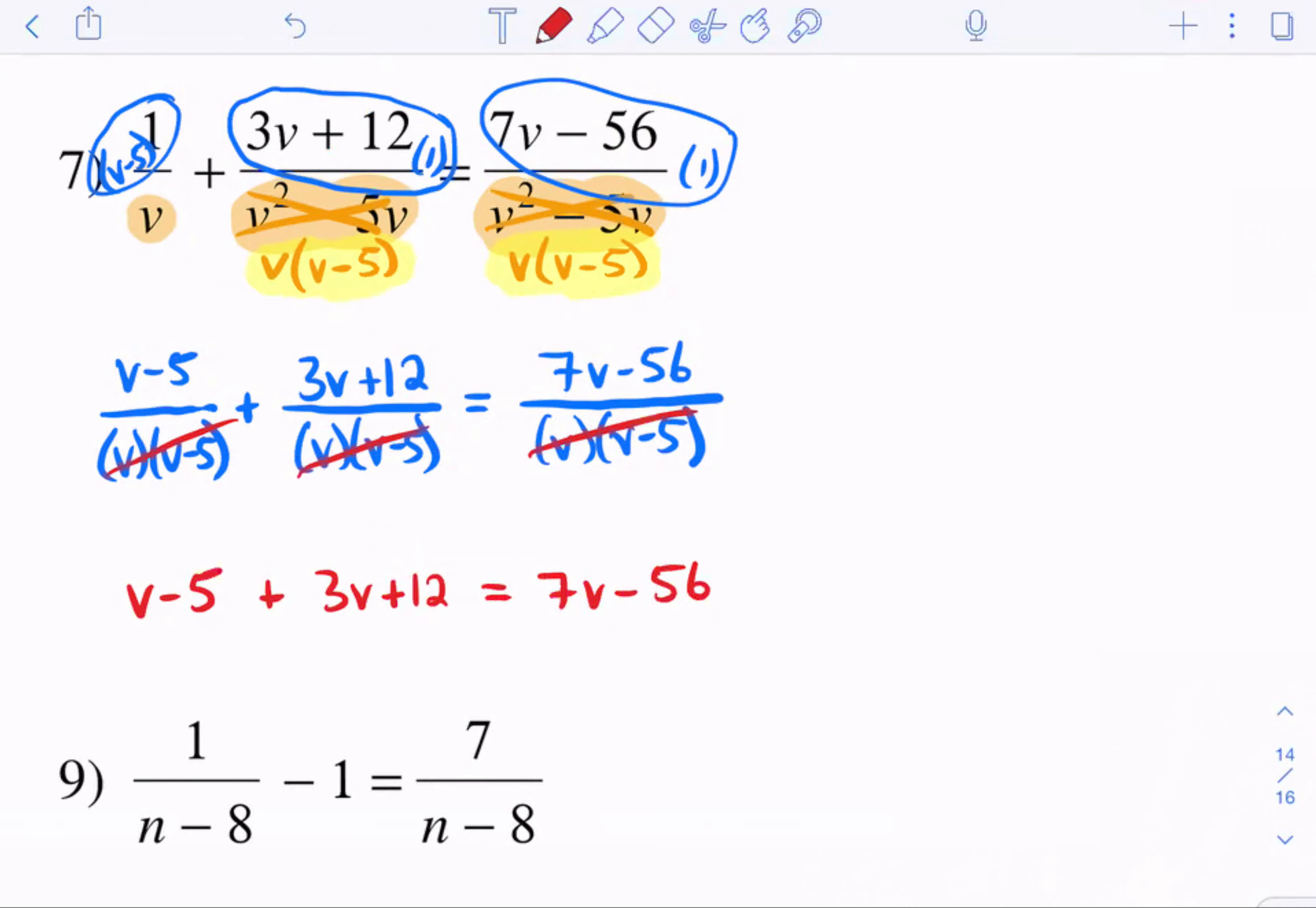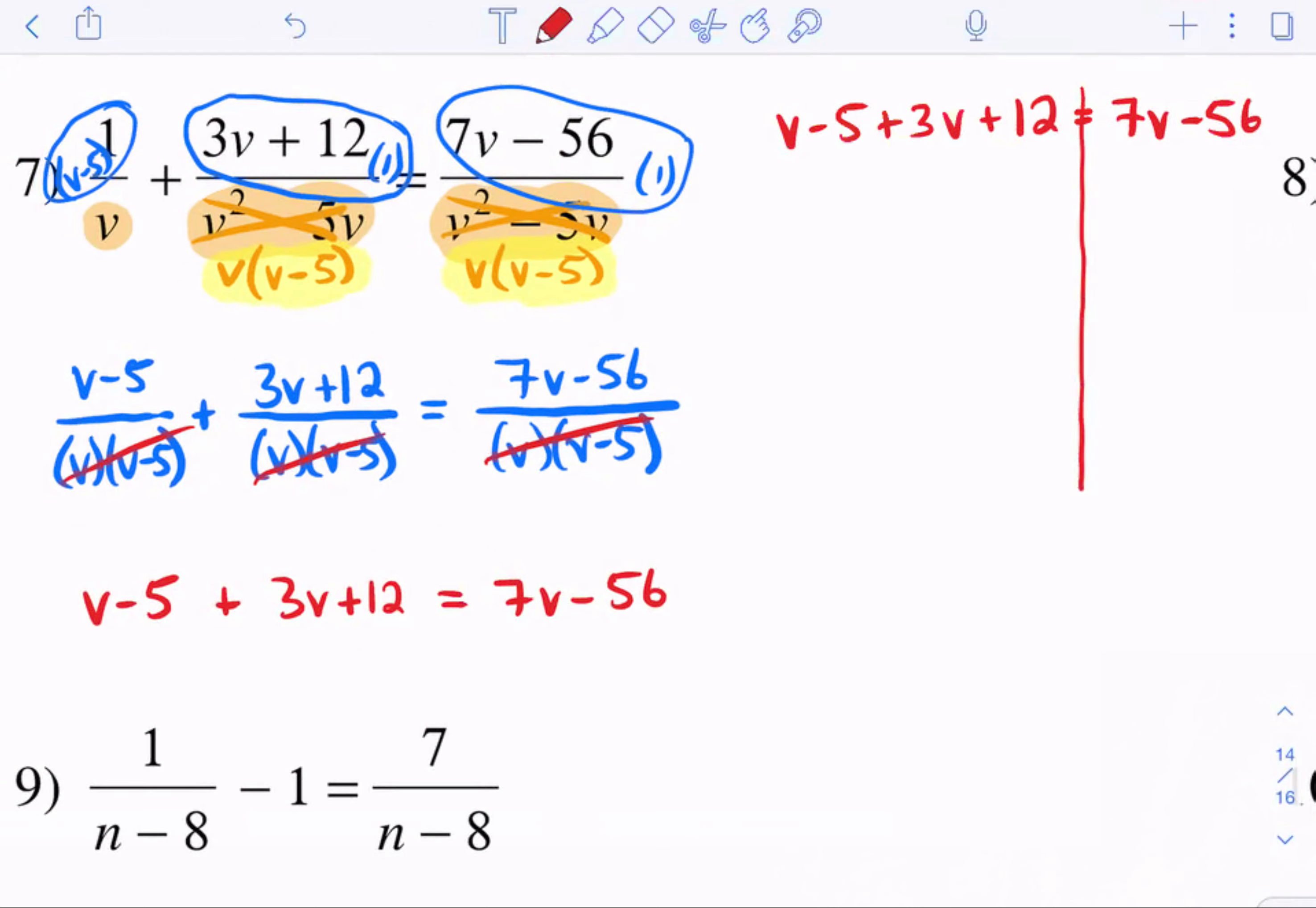So now that all the denominators are the same, we can cross them out. So this is now v minus 5 plus 3v plus 12 equals 7v minus 56. And yes, we can solve this. But the first thing we need to do is we need to combine like terms. So if I combine like terms, I have a v and I have a 3v, which gives me 4v. And here I have a negative 5 and positive 12. If you combine a negative 5 and a positive 12, you get a positive 7.